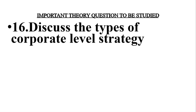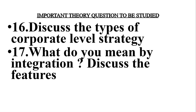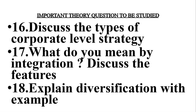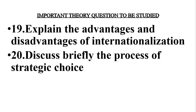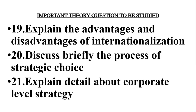Next, discuss the types of corporate level strategy — again a very important topic. Next, explain what do you mean by integration and discuss its features, meaning and features of integration. Next, explain diversification with examples — you'll have to explain the meaning and give as many examples as possible, along with the features of diversification. Next, explain the advantages and disadvantages of internationalization. Next, discuss briefly the process of strategic choice. And the 21st one: explain in detail about corporate level strategy — again a very important topic.